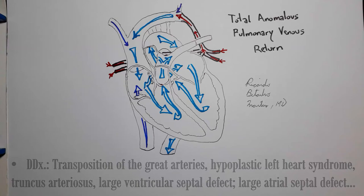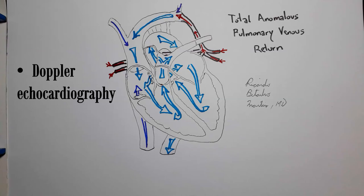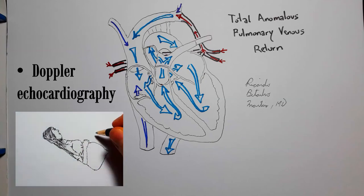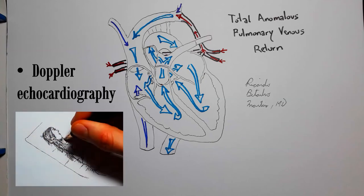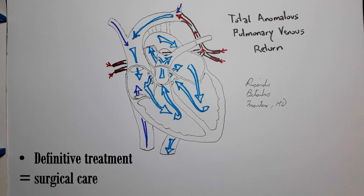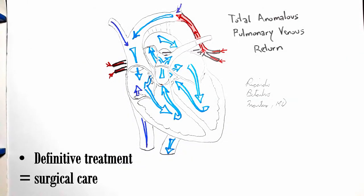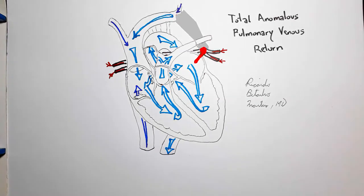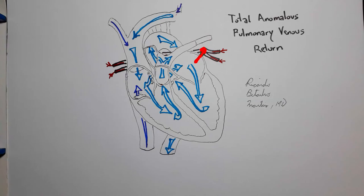The gold standard for diagnosis is Doppler echocardiography, and fetal echocardiography may diagnose the disease before birth. There are many possible procedures and medications to stabilize the patient until surgery, but definitive treatment is almost invariably surgical. Essentially, it all boils down to detaching the pulmonary veins from where they are draining into and reattaching them to the left atrium, in addition to closing the always-present atrial septal defect.